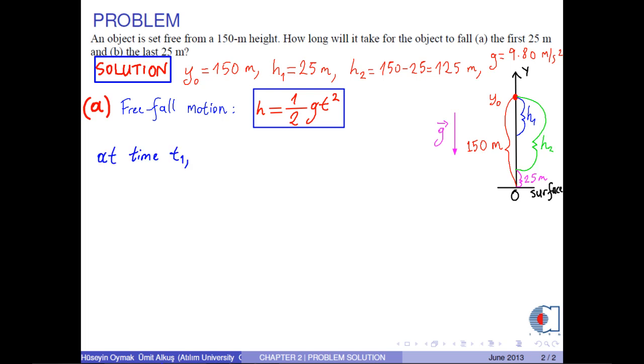At time t1, we have h1 equals 1 over 2 times g times t1 squared. As a result, we have time t1 as square root of 2h1 over g. If we put the corresponding numerical values into this equation,